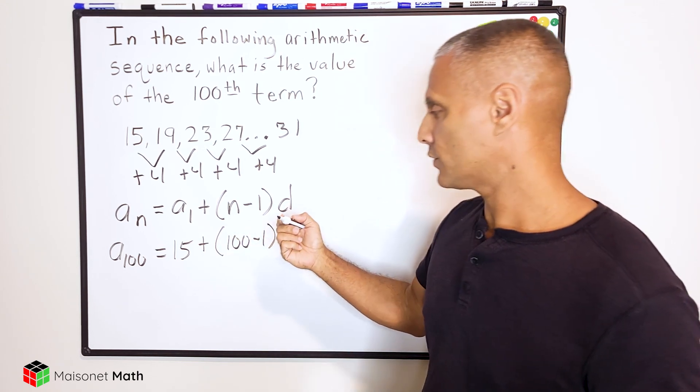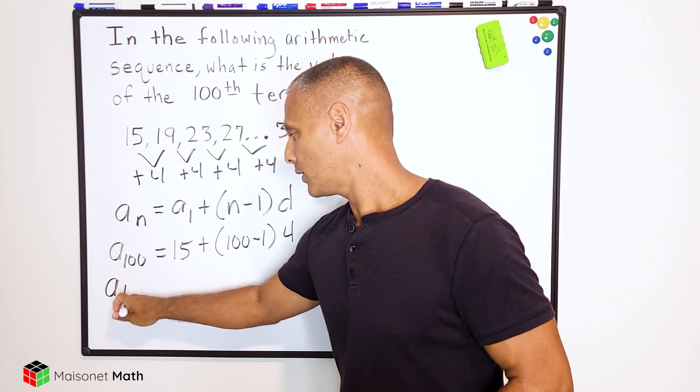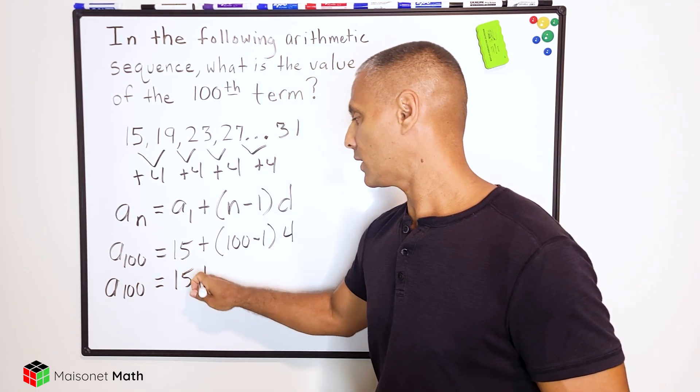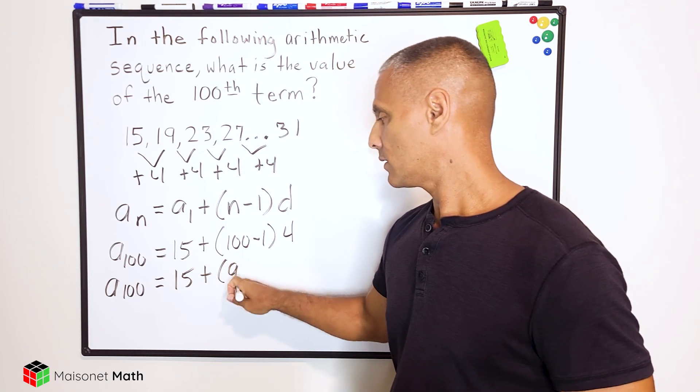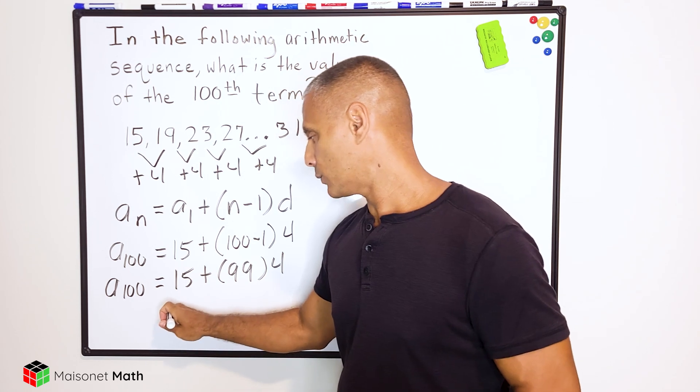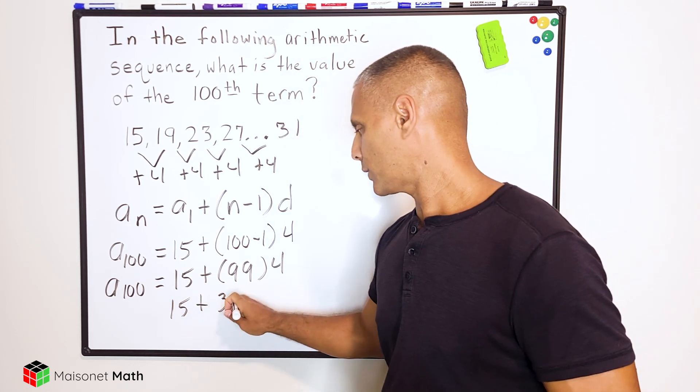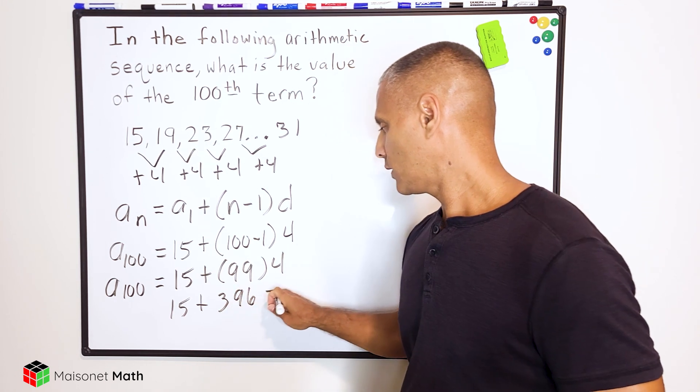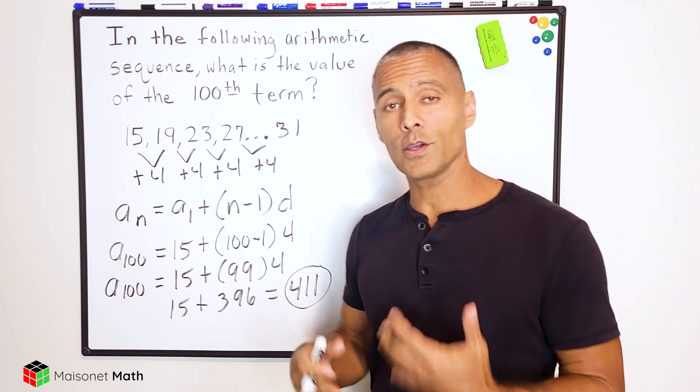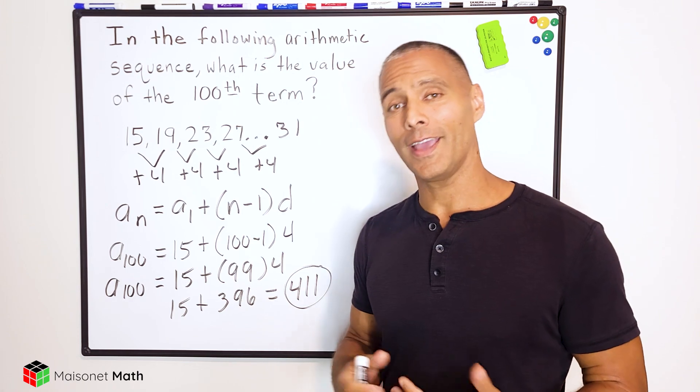So let us go ahead and solve our equation. So we have a sub 100 here, or the hundredth term, is equal to 15 plus 99 times 4, which is equal to 15 plus 396, which is equal to 411. So we now know that the value of the hundredth term in our sequence is equal to 411.